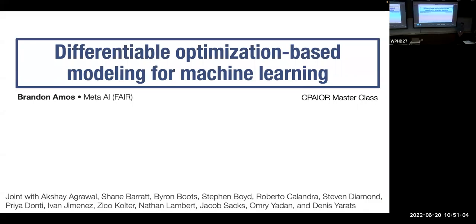Brandon Amos from Facebook AI Research in New York City is a research scientist working in machine learning, optimization, with a recent focus on reinforcement learning, control, optimal transport, and geometry.